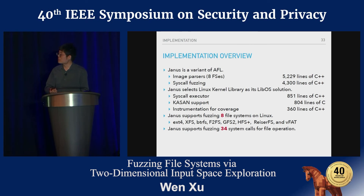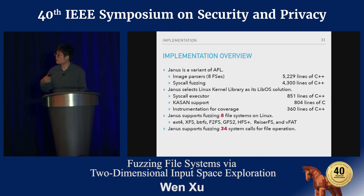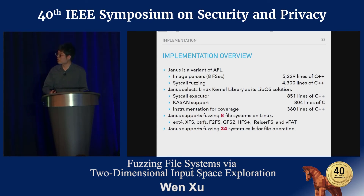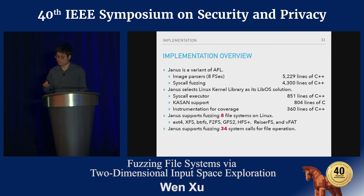Janus is implemented based on AFL, using AFL's binary block mutation algorithm, which also fits for mutating metadata blocks. We implemented our own syscall fuzzer. We selected LKL, the Linux kernel library, as our library OS solution, which contains a syscall executor. We also introduced kernel address sanitizer (KASAN) support, which is very popular for finding bugs, and instrument for coverage. Janus supports eight mainstream file systems on Linux and supports 34 system calls related to file operations.